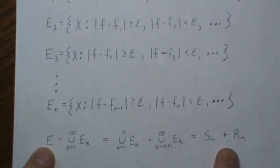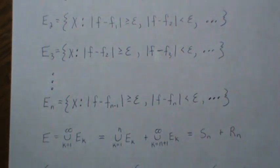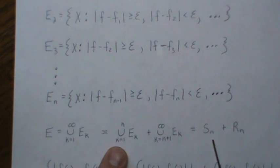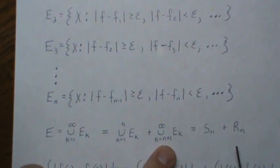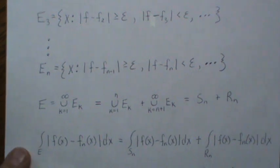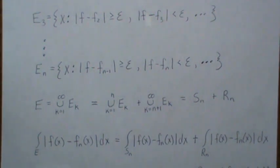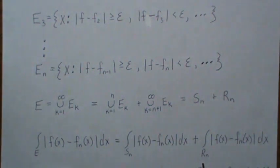And so if we generically let them be represented by S_N and R_N, we can break up this interval into two pieces over these disjoint regions.